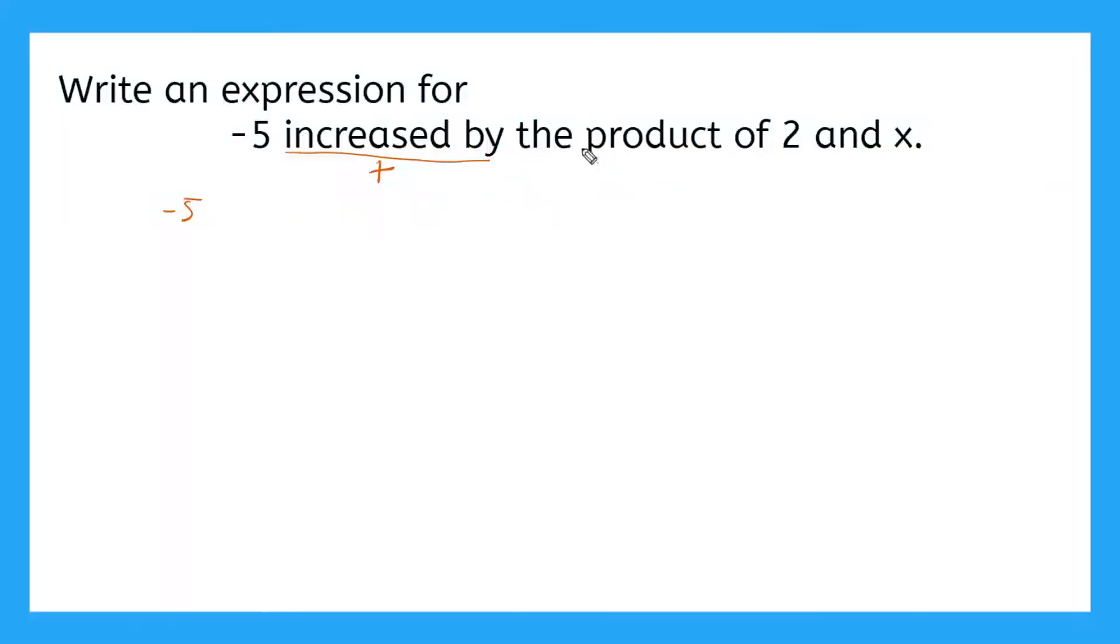And then here I have the product of. What does the product of mean? Yeah, these words mean multiplication. And since it says product of two and x, I'm finding the product of two and x. So that means I'm multiplying two times x. What's another way to write that? Yeah, I could say two x. Okay, so I'm saying negative five is increased by the product of two and x. So I know that the product of two and x, this whole thing is two x.